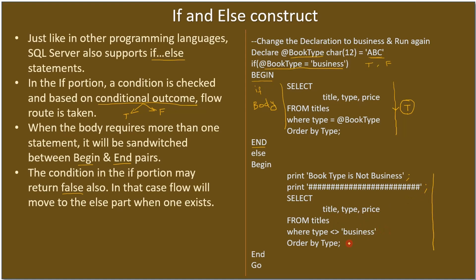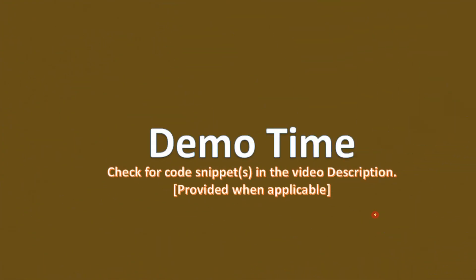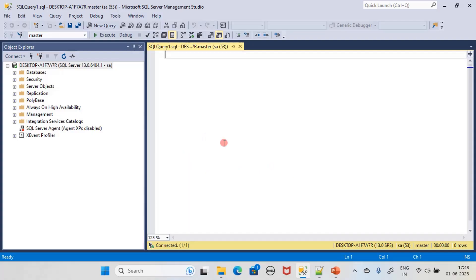In the else portion, if you have only one statement, a semicolon is not mandatory but you can keep it. If you have three statements, begin and end is required. So there are two begin-end pairs: one is for the if portion and one is for the else body. When the condition evaluates to false, we will enter the else portion and start executing those statements.